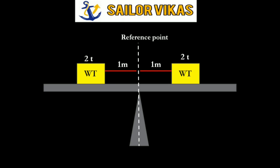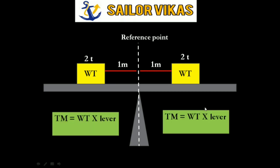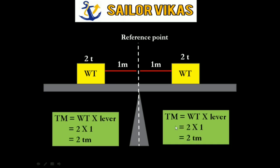Moment is the product of weight and lever, where lever means the distance of the weight from the reference point. Applying the formula: weight is 2 tons and lever is 1 meter, so the moment is 2 ton-meter on both the left and right sides. Since the moment is the same on both sides, the seesaw is in a balanced position.